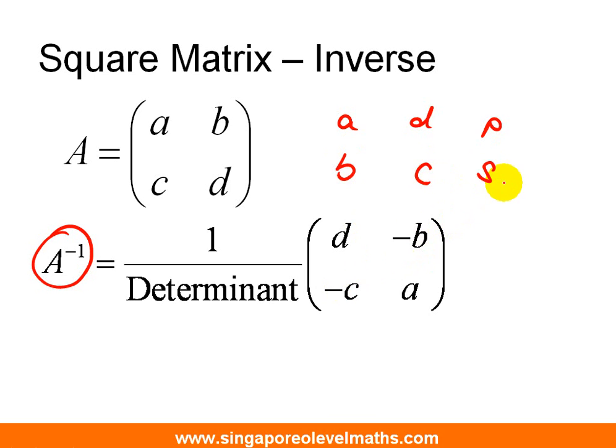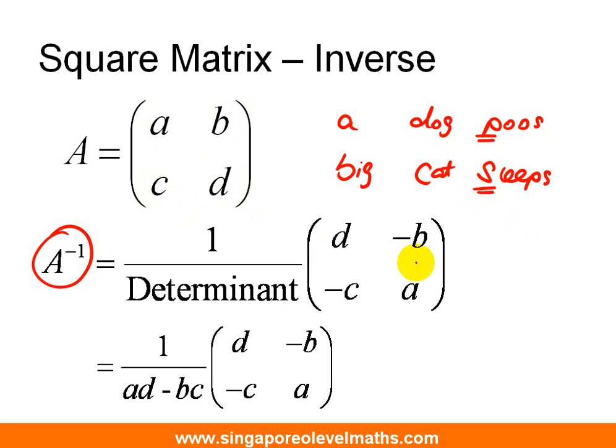Now, let me share with you a letter code name that I share with my student to remember this ADPBCS. In fact, it stands for Adopt Pools, Big Cat, Sleeps. And with that understanding, P stands for Position, S stands for Sign. Alright, as long as you remember that your elements are called in this manner, ABCD, then you can easily get your A inverse really quickly.